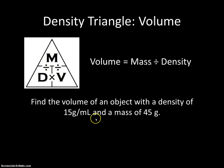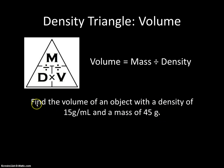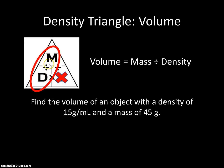Now let's calculate volume. The problem is: find the volume of an object with a density of 15 grams per milliliter and a mass of 45 grams. We know we have density because of the grams-per-milliliter unit, and we have mass because of grams. We're trying to find volume — that's the one we don't have — so we cover it up in our density triangle. That leaves us with M over D, and since we're crossing the horizontal line, we're dividing — volume equals mass divided by density.